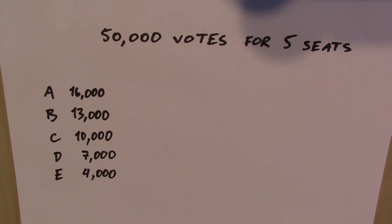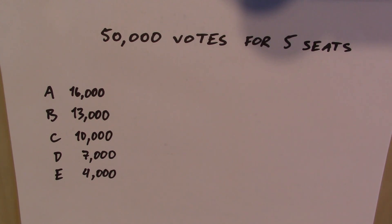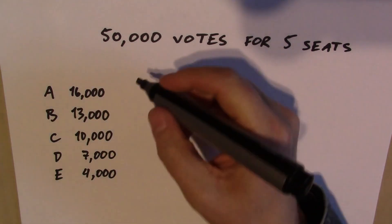For instance, if we have five seats up for grabs and there are 50,000 votes, how many votes does a party need to get a seat? The answer is: you can't say — you have to look at how the votes are distributed. The only number you can calculate is 50,000 divided by five, so 10,000 votes should be good for a seat. And it's true that any party that gets 10,000 votes will get a seat, but the exact number of seats is a little more complicated than that.